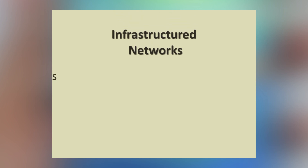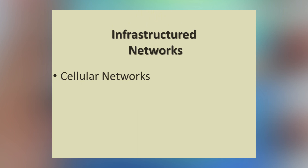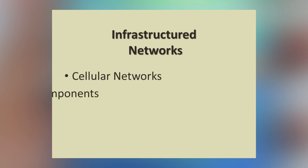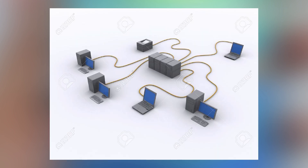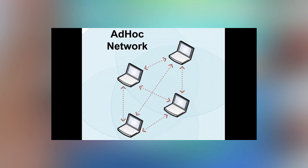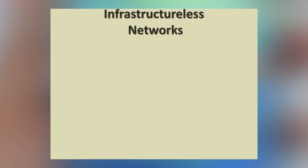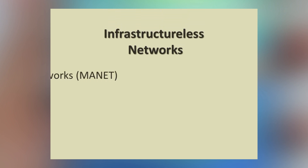Infrastructure-based network is also known as cellular networks. Here, routers and gateways are stationary components, and they are used to connect the mobile nodes within the network. Infrastructure-less network is also known as Mobile Ad Hoc Network, in short, MANET.